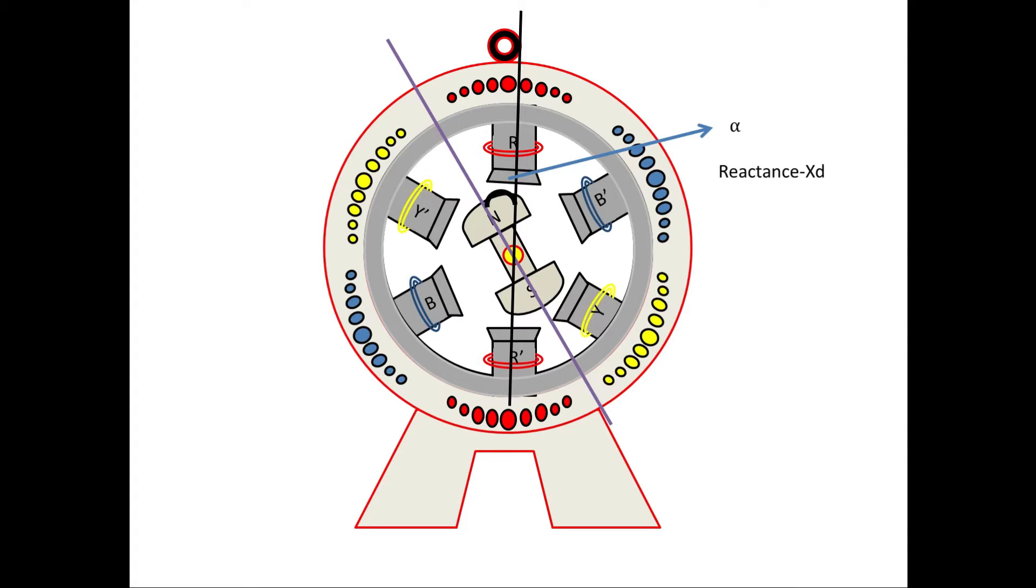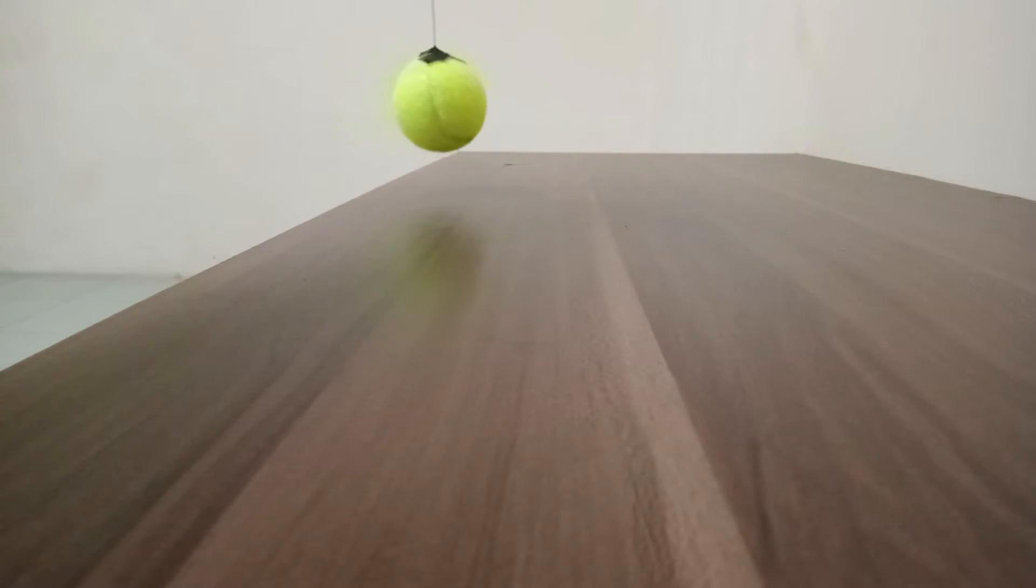Let us consider it is alpha. During this time, the generator has reactance, it's Xd. Then what is Xd dash? It is the transient stage. Before going to this transient stage, we will see one small demo video.